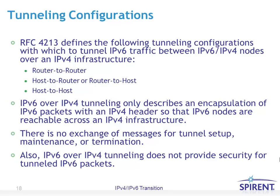RFC 4213 defines the following types of tunnel configurations: router-to-router, host-to-router, router-to-host, and host-to-host. Router-to-router generally means you have one version of IP on the endpoints and another in between — for example, IPv6 on both ends and IPv4 in between, requiring a router-to-router tunnel. There are also circumstances where you might have IPv4 on the ends and IPv6 in the middle, which will be addressed in part 2.